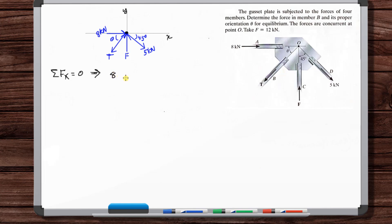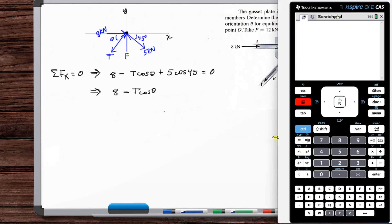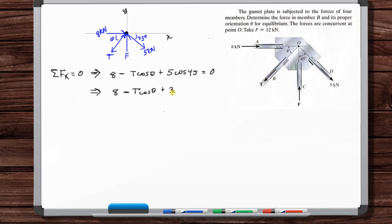So eight, positive eight, and then minus T cosine theta, and then plus five cosine of 45 is equal to zero. So okay, so we've got eight minus T cosine theta, and then five times cosine of 45 is 3.5355.